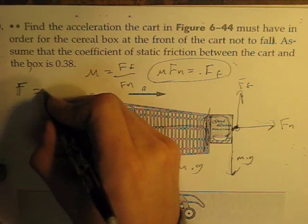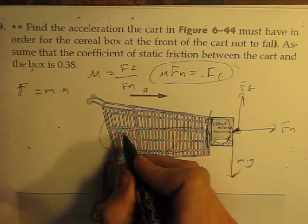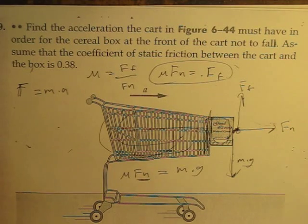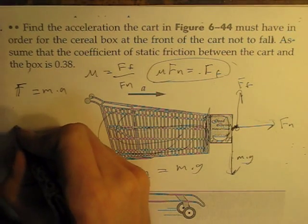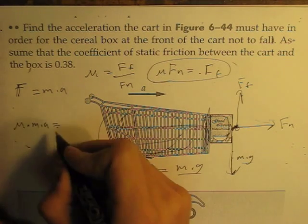So we know that force equals mass times acceleration. So this is the force right here. And it equals mass times acceleration. So we could just plug that in there. So mu times mass times acceleration equals m times g.